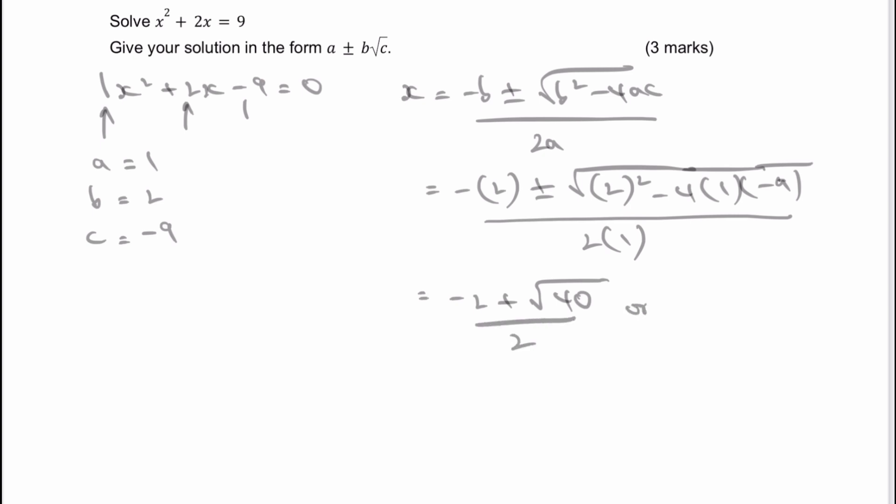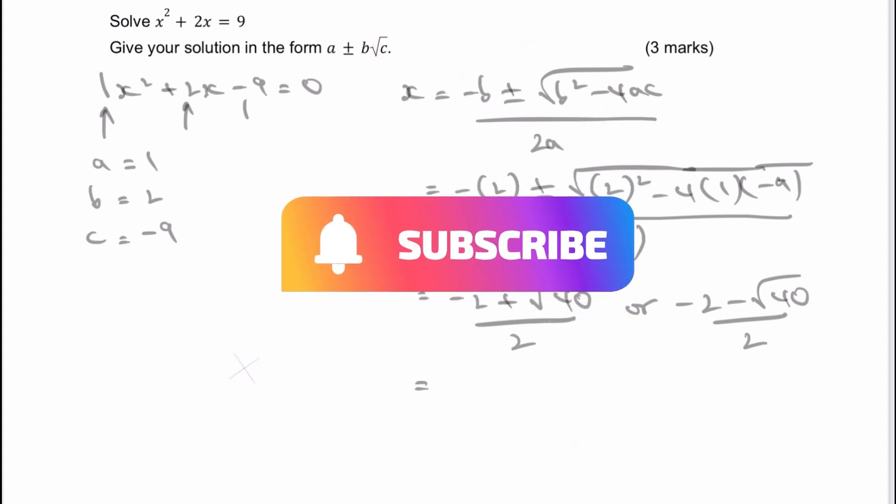And then my other is the negative, the square root of 40, all divided by 2. Now, if you put that straight into a calculator and press the equals sign, you would actually get a reduction to the way it is in the actual question of a ± b√c.